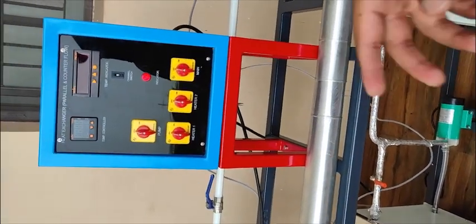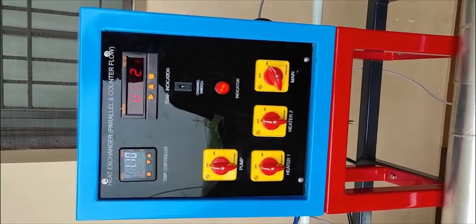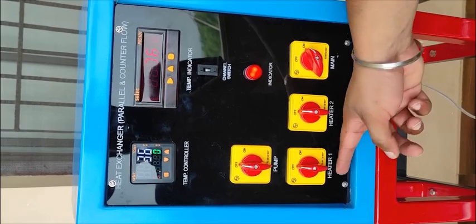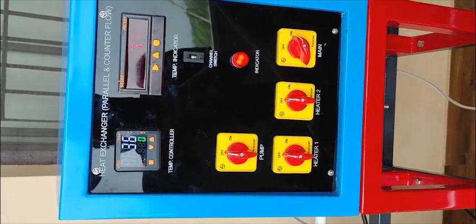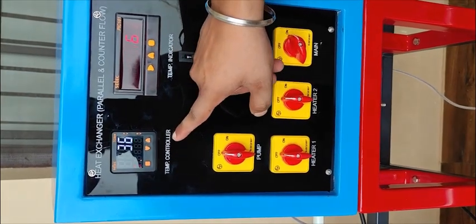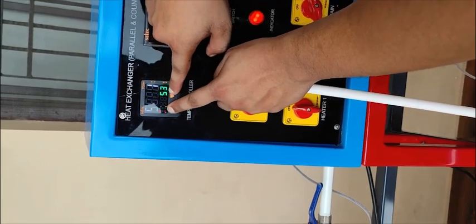This is our control panel. You can switch on the mains from here. These are heater 1 and heater 2. As I told you, there are two heaters inside the water bath. I can switch on the heaters from here. This is temperature control to set the temperature of the water bath. Suppose this is 50—I want to change this to 60.